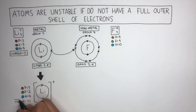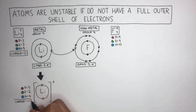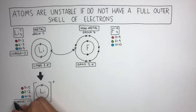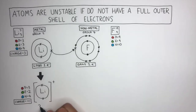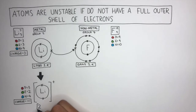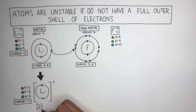Positive ions are known as cations. Writing the electronic configuration is just 2 in square brackets and then a positive sign to represent the charge.